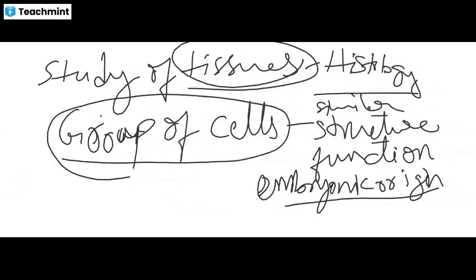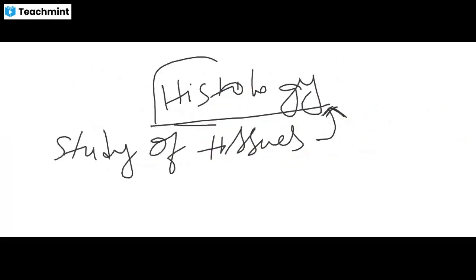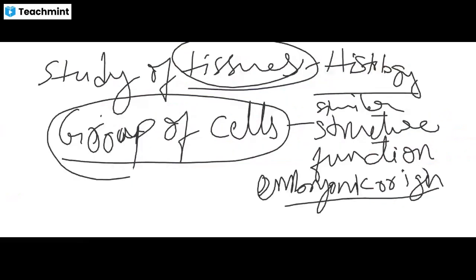This is the introduction to histology. Study of tissues is known as histology, also known as micro anatomy or microscopic anatomy. A group of cells which are similar in their structure, function, and have a common embryonic origin form a tissue. Tissues carry out specialized activities. All cells are held together with intercellular matrix and cell junctions. Intercellular matrix is made up of mucopolysaccharides and glycoproteins.